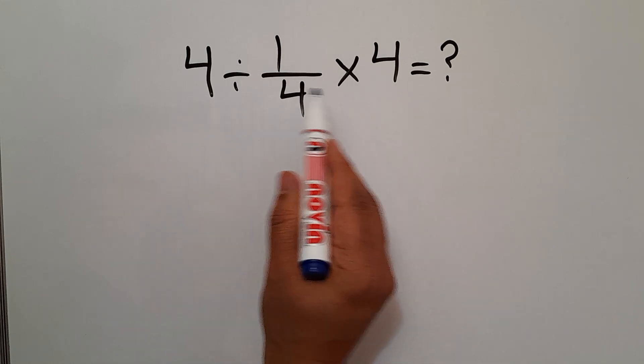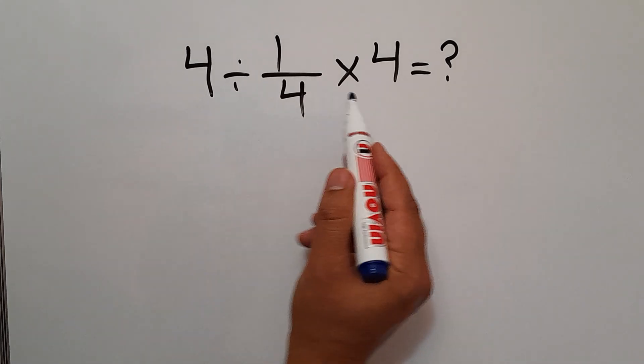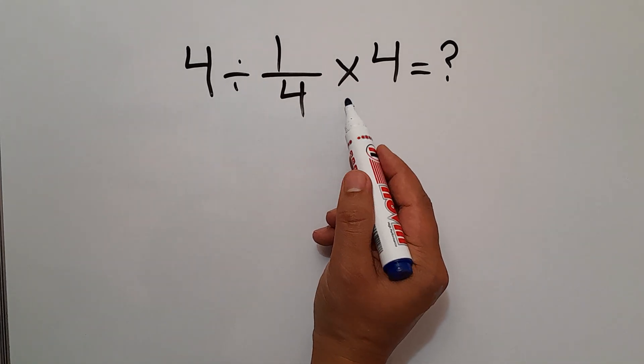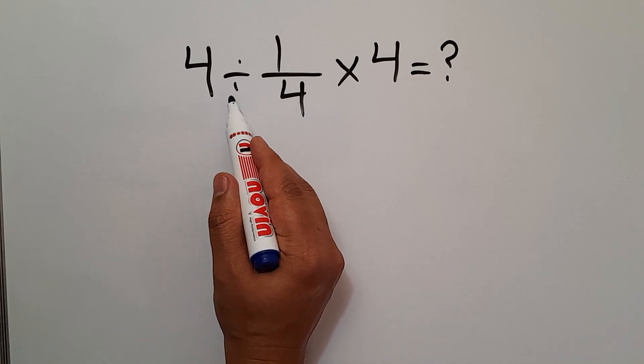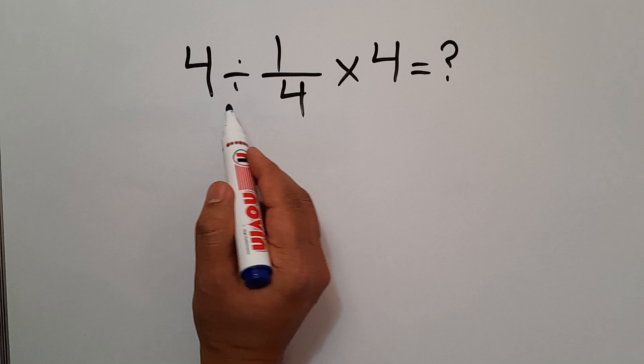In this expression, we have one division and one multiplication. According to the order of operations, multiplication and division have equal priority and we have to work from left to right. So first,